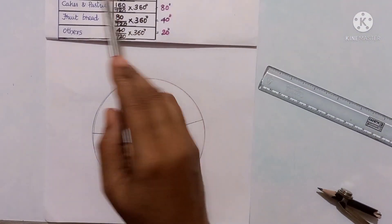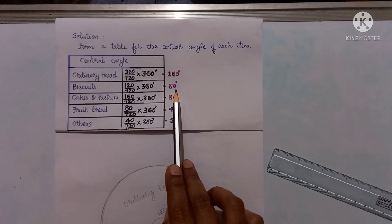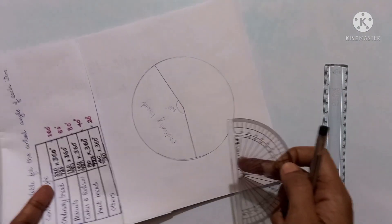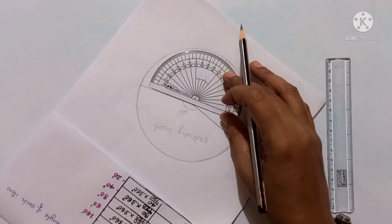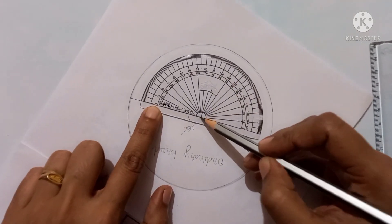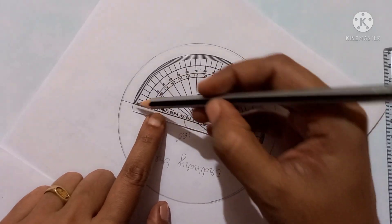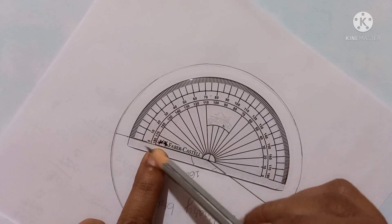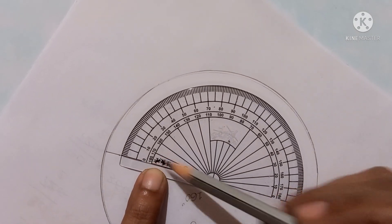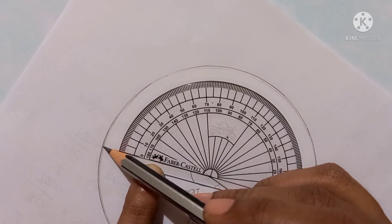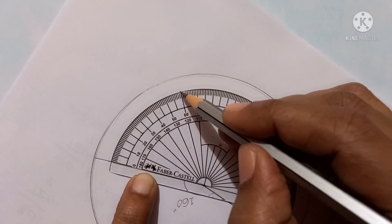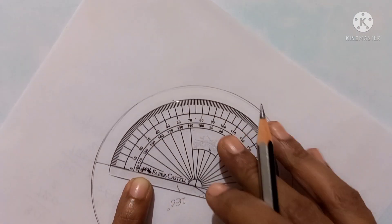For the second item, biscuits, we need a 60 degree sector. Turn the paper if needed to make it easier. Keep the protractor midpoint on the center and the baseline on the radius. Since it is on the left side, measure from zero up to 60 degrees. Put a point at 60 degrees and remove the protractor.